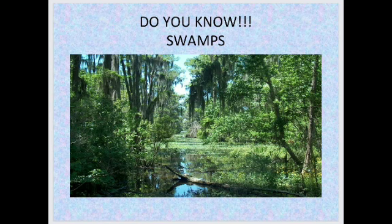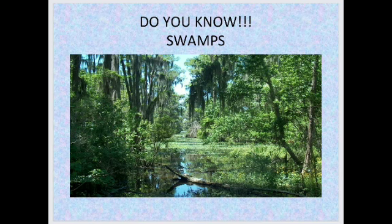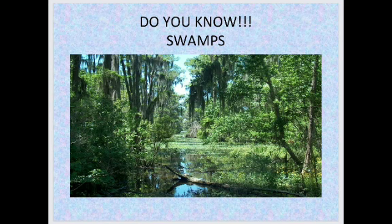Swamps are wetlands that are forested. They occur along large rivers or on the shores of large lakes. The water of a swamp may be freshwater, brackish water, or seawater. Swamps are important for providing fresh water and oxygen to all life. Some examples of swamps in Tamil Nadu are: Pichavaram mangroves in Chidambaram, Muthupet mangrove wetland, Pallikaranai wetland in Chennai, and Chembarambakkam in Kancheepuram. These swamps play a very important role in supplying oxygen and fresh water to all living things.